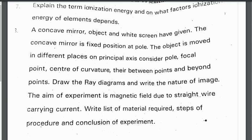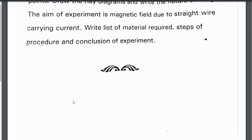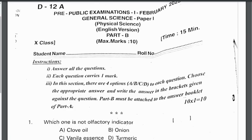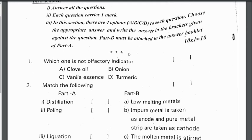Third question: the aim of the experiment is magnetic field due to a straight wire carrying current. Write a list of materials required, steps of procedure, and conclusion of the experiment. One experiment will definitely be asked in the board exam, so students prepare well.